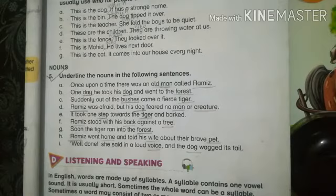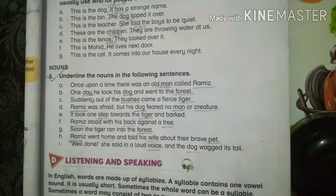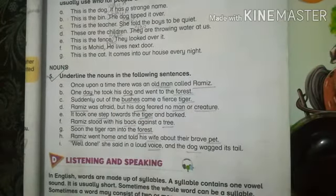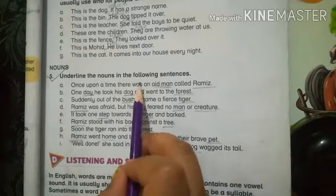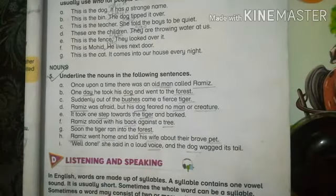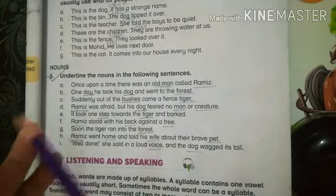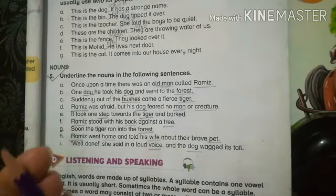What are Nouns? Surely you will need to study Nouns from previous classes. A noun is the name of a person, place, and thing. Here we have some sentences that are underlined. Underline the nouns in the following sentences. If there is a place or a person, it will be a noun.